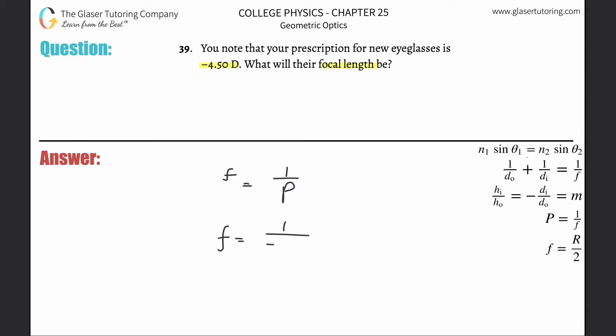Now you plug in the negative sign. The negative sign just means that these are nearsighted glasses, meaning you cannot see far. If it were a positive value, that would mean farsighted, or in other words, you can't see near.